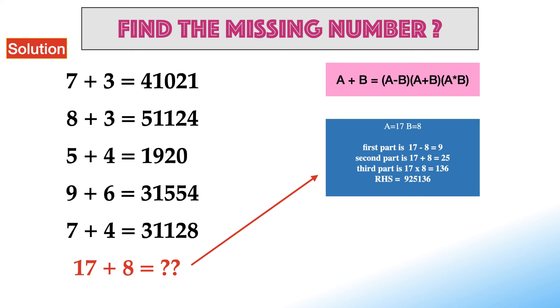Hence, the answer to this particular problem is 925136. By using this simple logic, we can solve this particular reasoning missing number puzzle in simple steps.